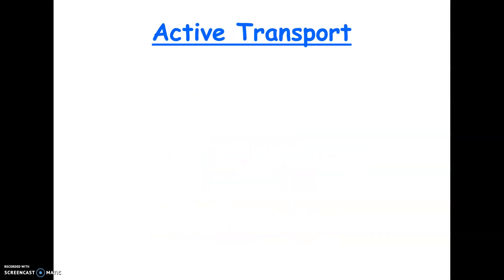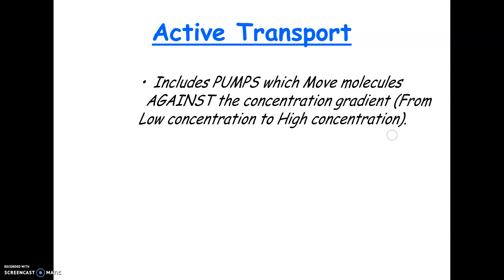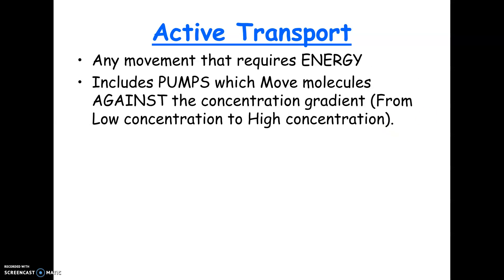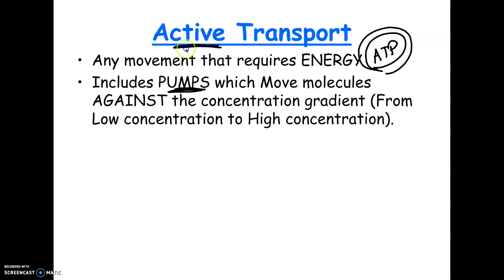All of that falls under the category of passive transport — passive meaning no cell energy is required. Active transport is anything that requires energy from the cell, usually in the form of ATP. If you see ATP in the picture, it's active transport. This includes pumps, which are proteins that move molecules against the gradient. As an analogy, if your boat got a hole in it, water coming in would be passive transport — going from high concentration outside to lower concentration inside.